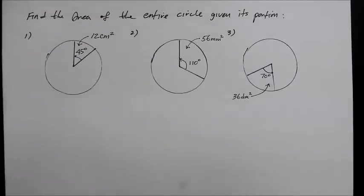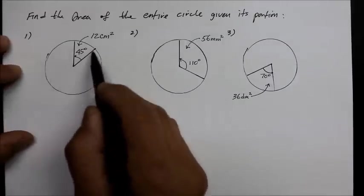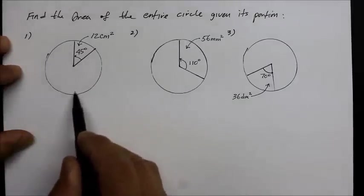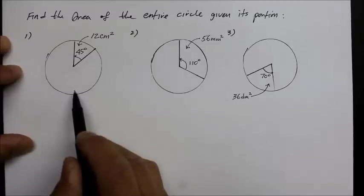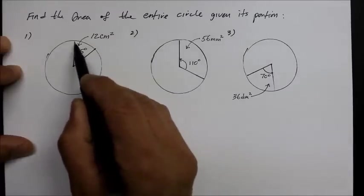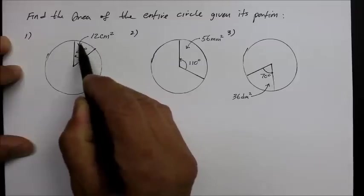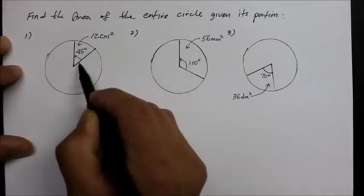Hi! This instructional video is about finding the area of a circle, the entire circle, when you're given not the radius, but instead the portion of that circle and its degrees.